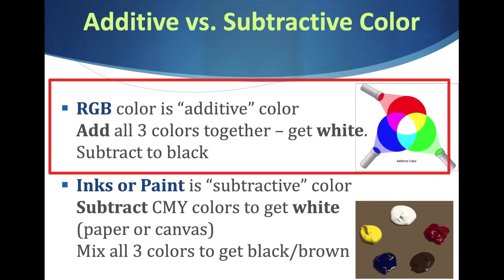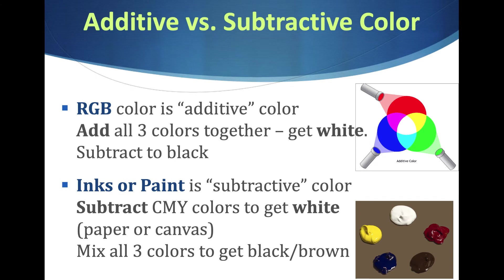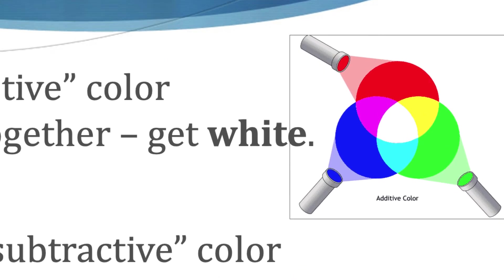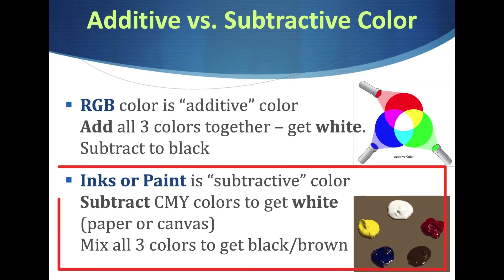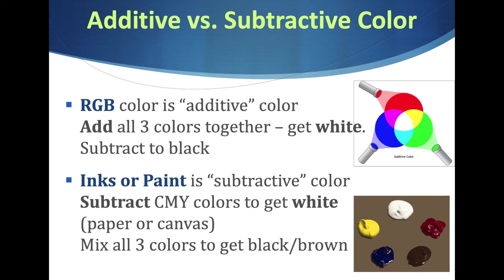RGB is called additive color because it works on your computer screen using light. When all the RGB colors are added together they make white. Paint is the opposite — you start with white and add colors, which removes the white, so it's subtractive. Inks and paints are called subtractive colors. That's why a photograph printed out will never have the same intensity as light on a computer screen.